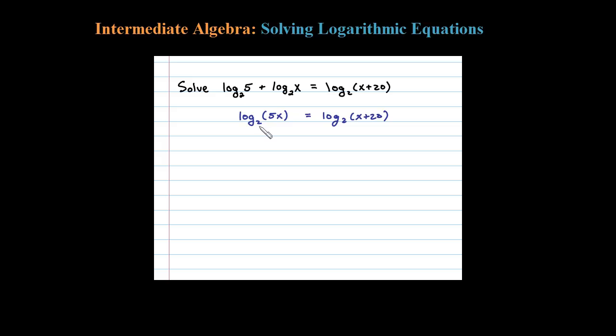Now we have log base 2 equals log base 2. Using the one-to-one property for logarithms, we can then equate the arguments. So the only way this can be true is if 5x equals x plus 20.